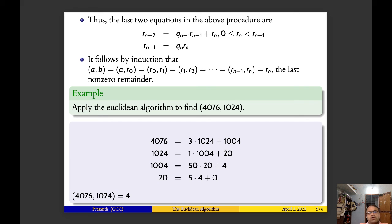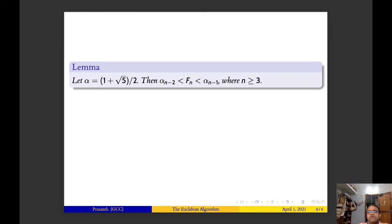20 equals 5 times 4 plus 0. Therefore the gcd of 4076 and 1024 is 4. Next we have this lemma: if α equals (1 + √5)/2, then α^{n-2} less than f_n less than α^{n-1} where n is greater than or equal to 3.